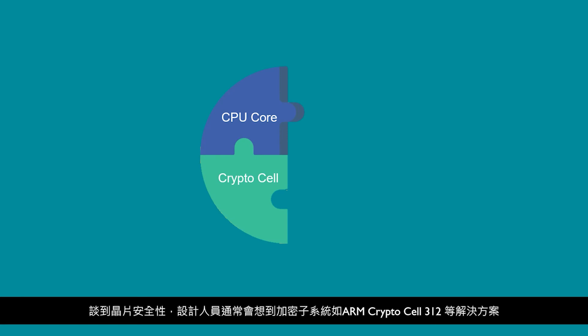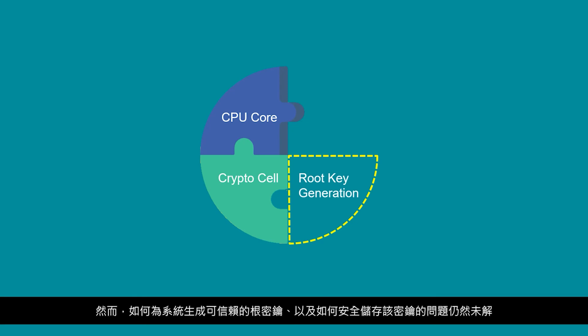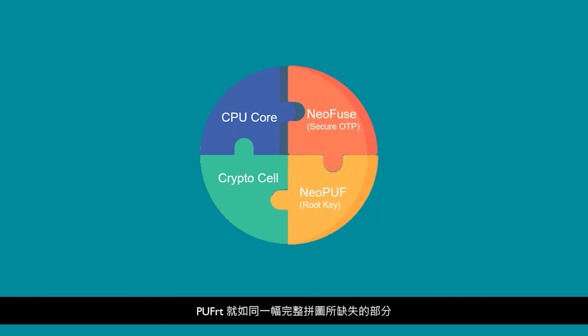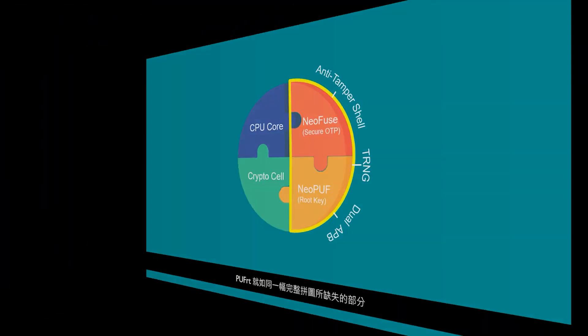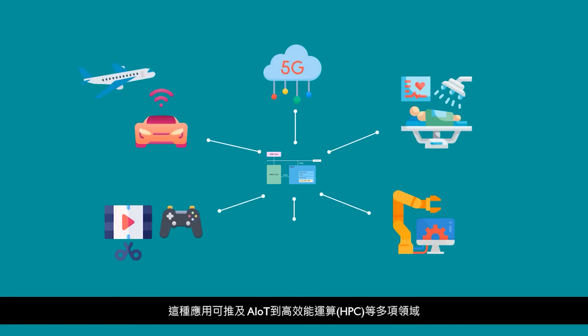When it comes to chip security, designers often turn to crypto subsystem solutions like ARM CryptoCell 312. The remaining obstacle, however, is how to generate and safely store the root key for the system. The Dual-APB PUF RT is the exact missing piece for the puzzle. By integrating PUF RT, the crypto subsystem and computation core can realize the security root of trust, secure storage, and complete security systems before being brought to market. Such a use case applies to multiple sectors, from AIoT to high performance computing and beyond.